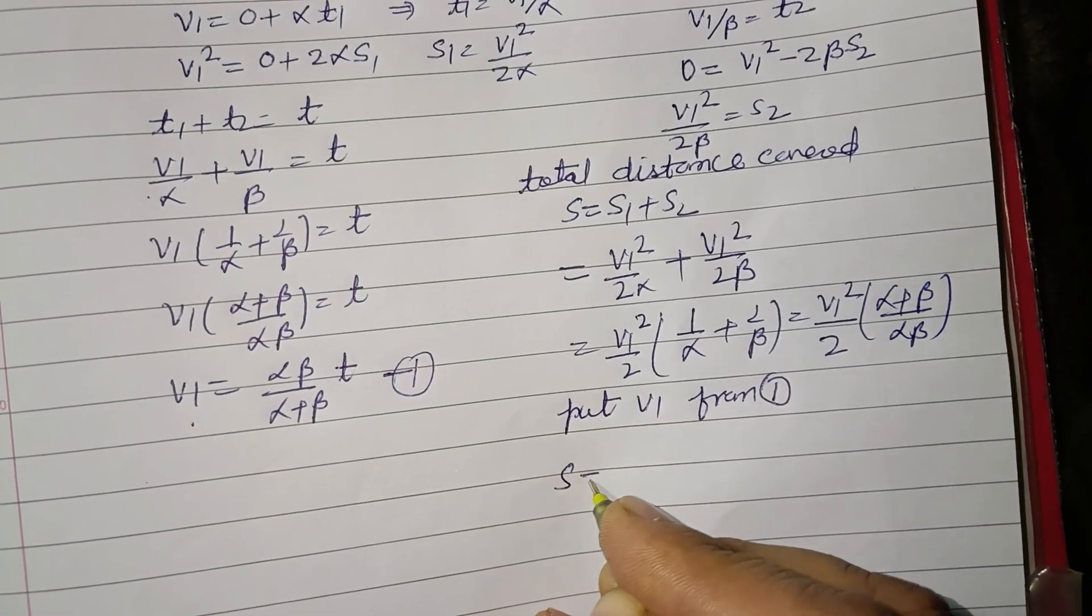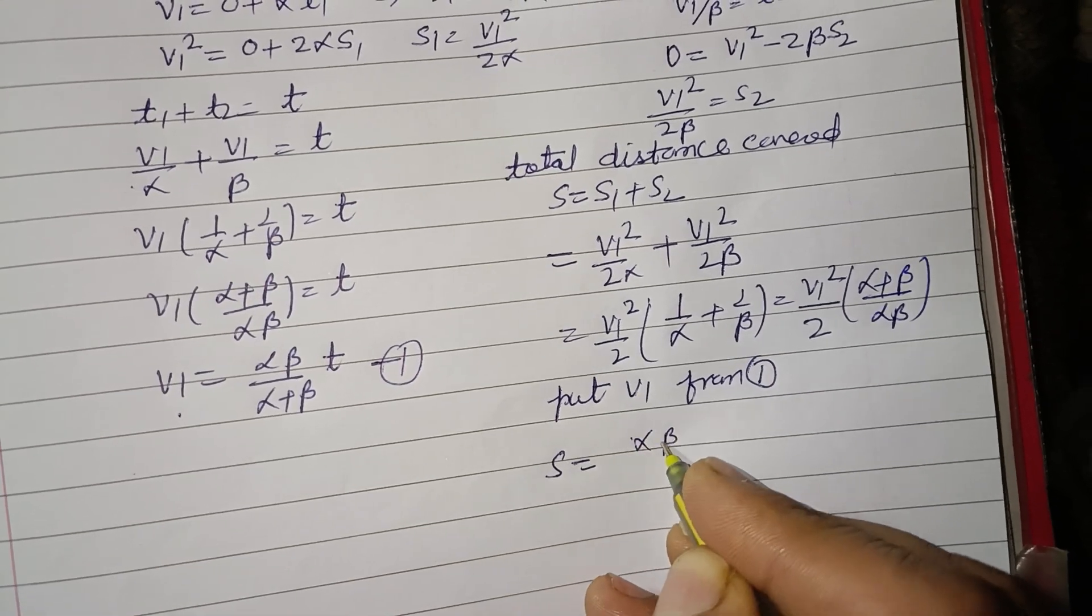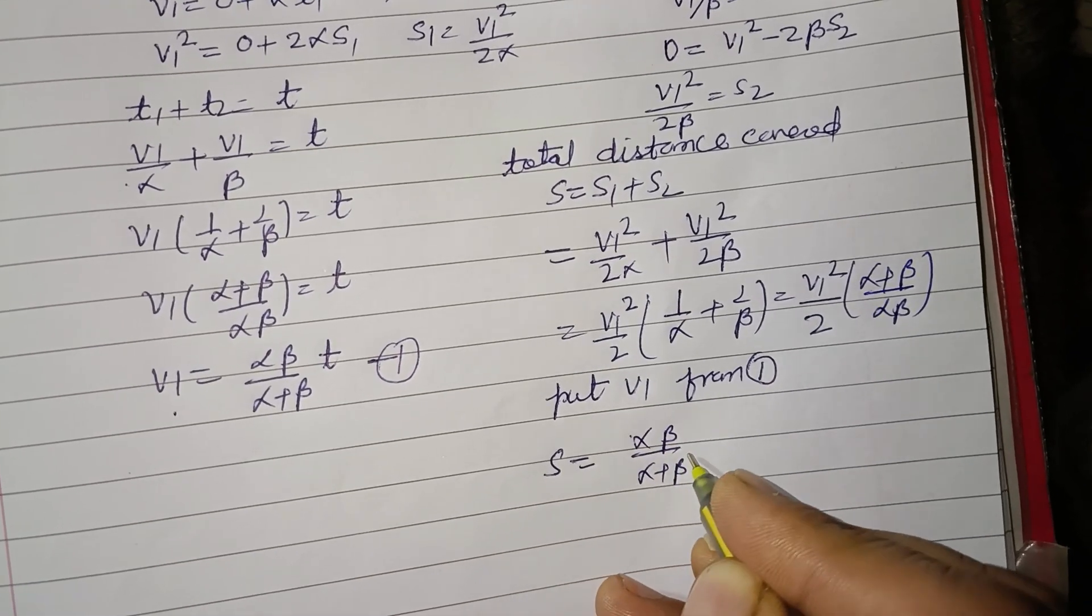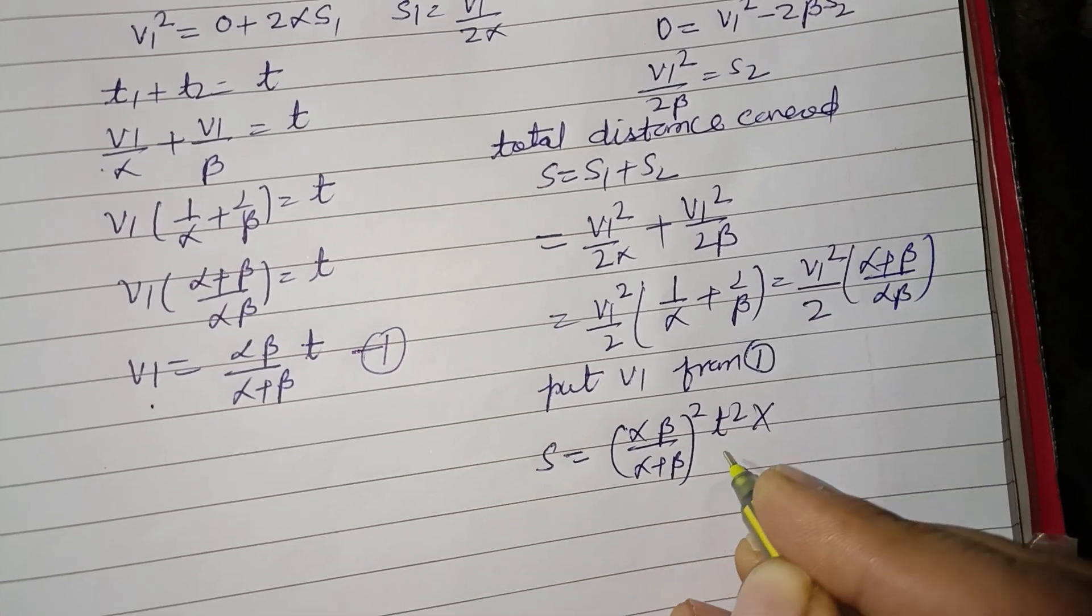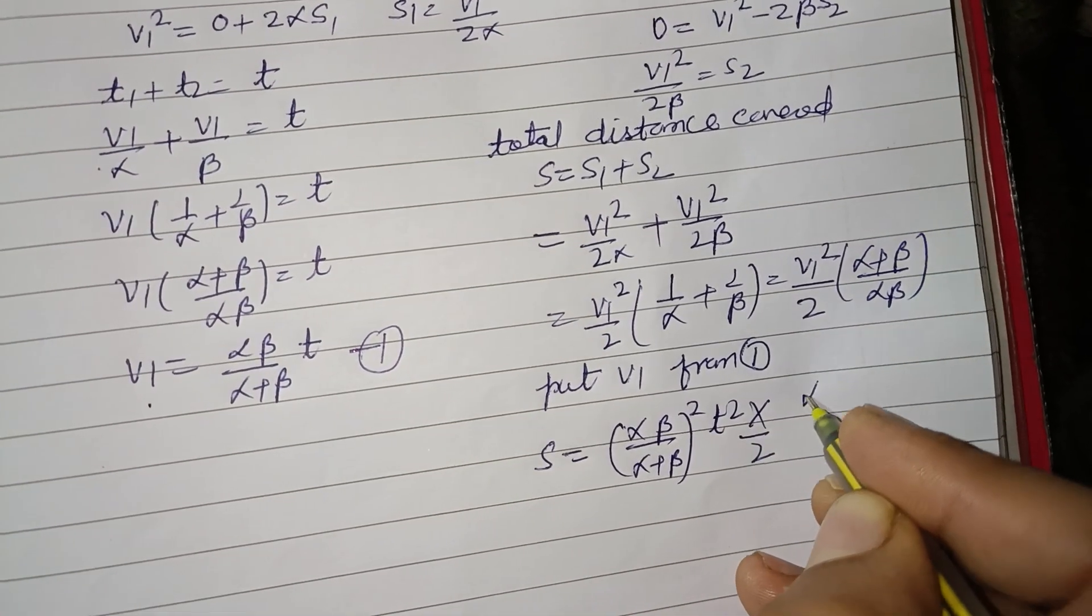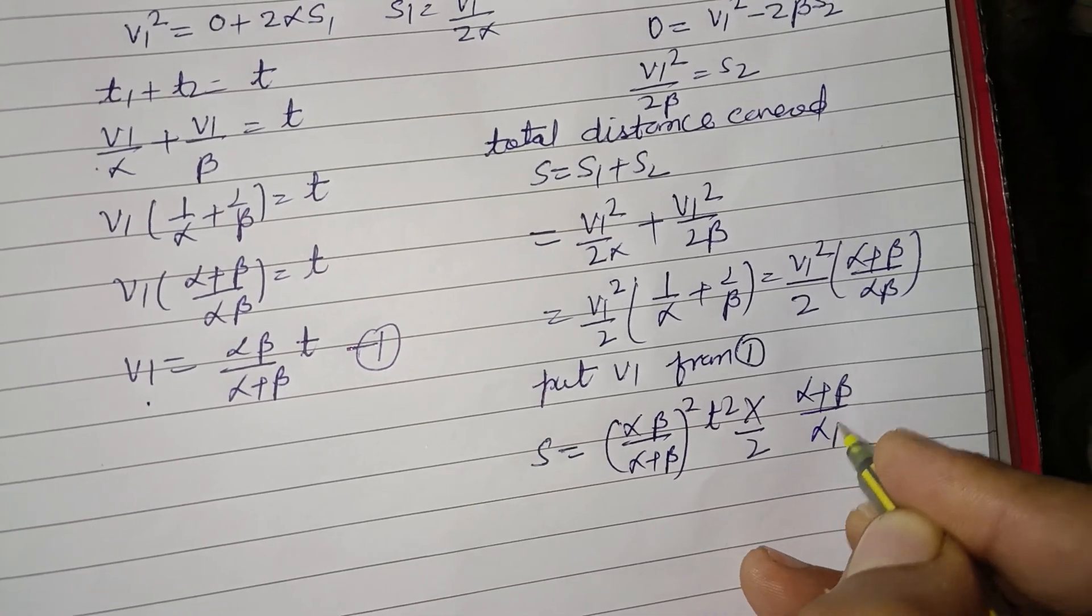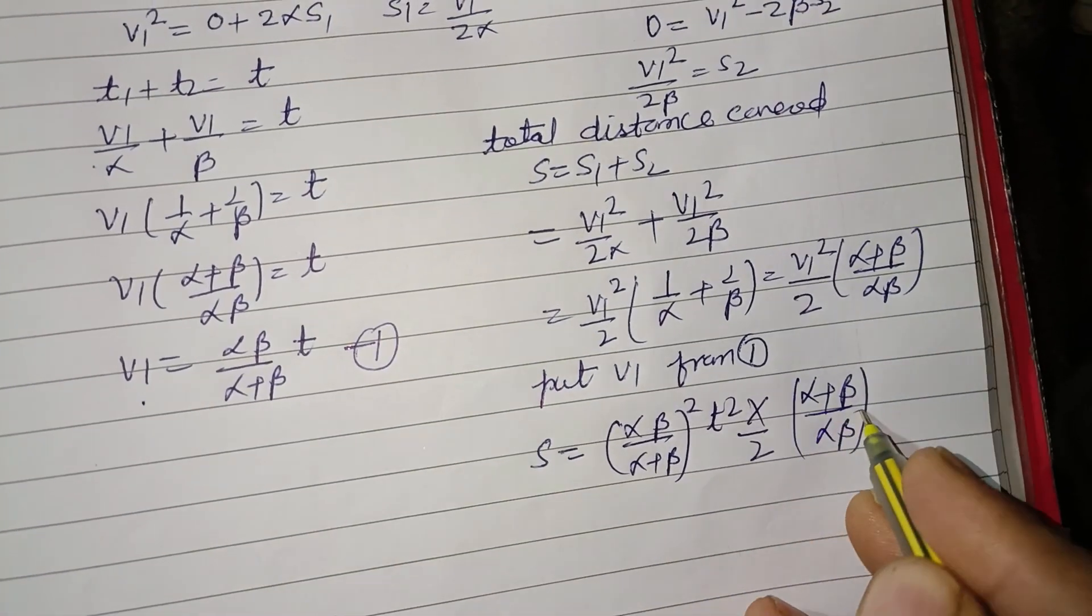We got s = v₁², where v₁ = αβ/(α + β), whole squared, times t² divided by 2 times (α + β)/(αβ).